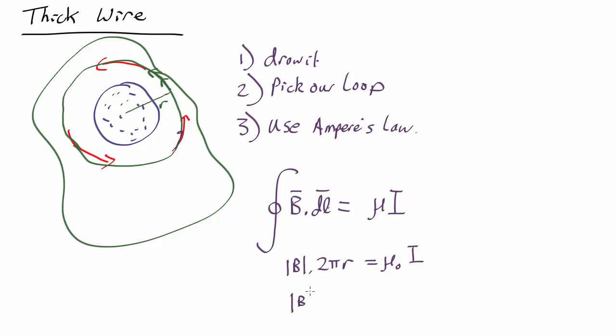So, the strength of the magnetic field is just mu nought i over 2 pi r.